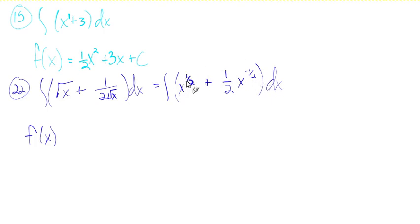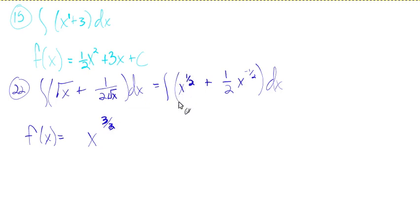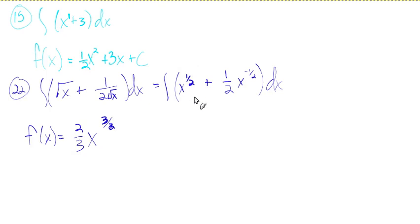We know that when we take the derivative we subtract 1 from the exponent and get this. So the exponent for x to the one half must have come from 3 halves — subtract 1 from 3 halves, you get 1 half. But we want a coefficient of 1 here. The derivative of x to the 3 halves brings down 3 halves, so we multiply by 2 thirds so that 3 halves times 2 thirds equals 1. When we subtract 1 from 3 halves, we get 1 half. So the first term is 2 thirds x to the 3 halves.